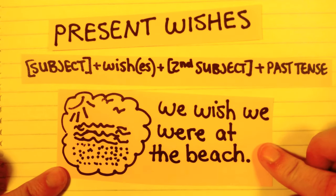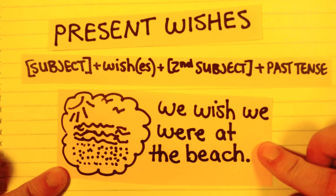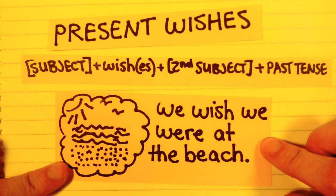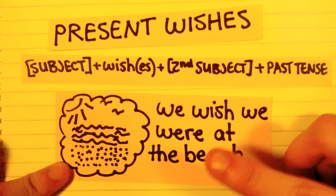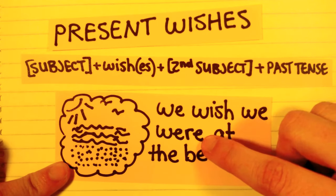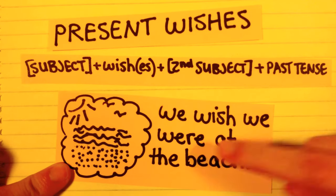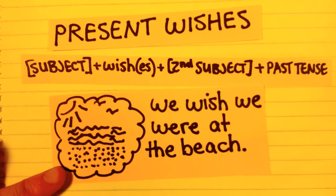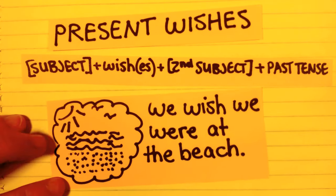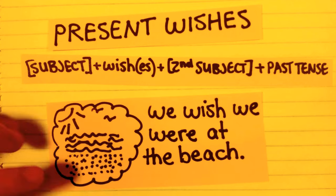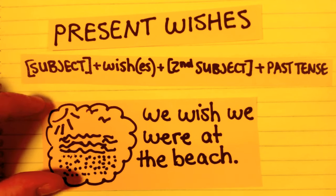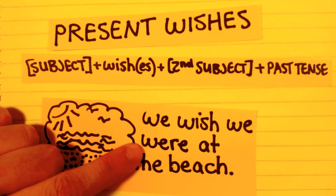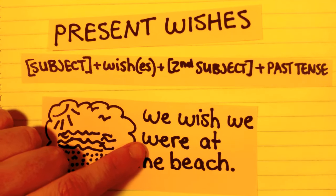'We wish we were at the beach.' We're not at the beach; we want to be at the beach, so we wish we were at the beach. You'll notice that 'were' is in the past tense. Now, the verb 'to be' is actually a little bit tricky, because when we talk about wishes, we leave all persons using 'were.'